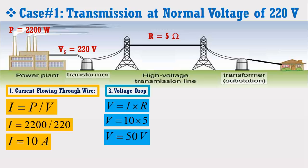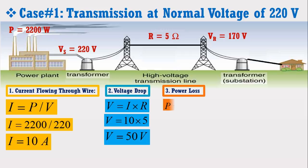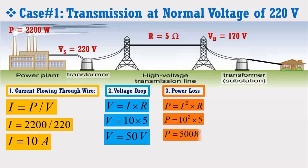It means that 50 volt is lost in the transmission line and 170 volt will be reached at the receiving station. The power loss due to heat dissipation is given by P = I² × R. Putting the values of current and resistance in the above formula, it is observed that 500 watt of power is lost in the transmission line.